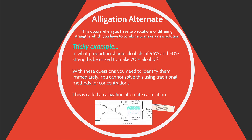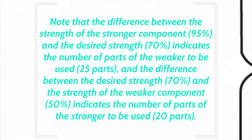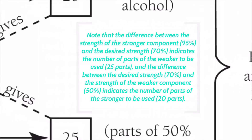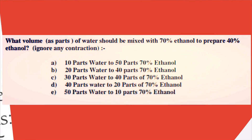Allegation alternate occurs when you have one strong solution and one weaker solution, and you've got to combine them to create a strength of solution which lies in between the two. This can sound complicated; however, if you learn this statement and memorize this picture, then you'll be absolutely fine. Try this example on for size.